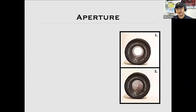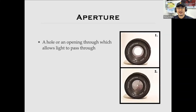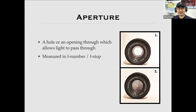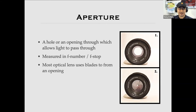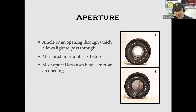What is aperture? Aperture is the hole or opening through which light passes. It is measured in f-stop or f-number. Most optical lenses use blades to form an opening — you may have heard of six-blade, seven-blade, or nine-blade lenses — and some lenses use only three blades. Looking at this lens, you can see roughly six blades.